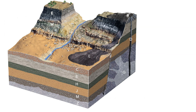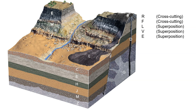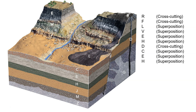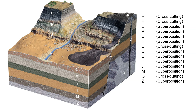Next, stop the video and go ahead and relative date this sequence. The answer is: R is actually the youngest — the river is youngest because of the principle of cross-cutting — followed by F, L, V, E, H, D, C, E, H, J, M, G, Z. You've now gone ahead and relative dated this entire landscape. It's all about using the actual principles to help you do so.